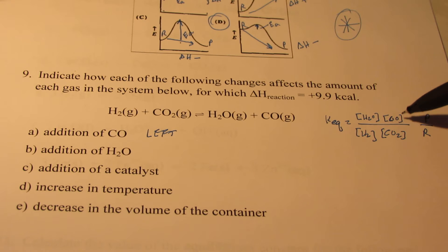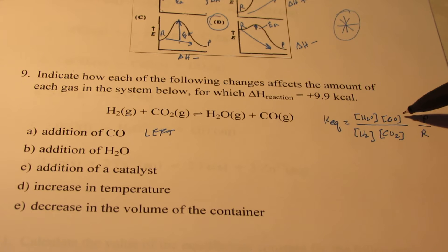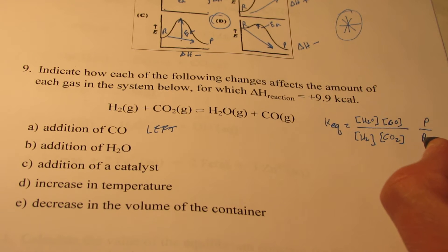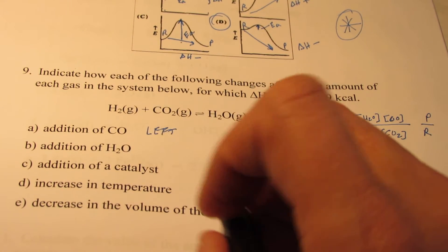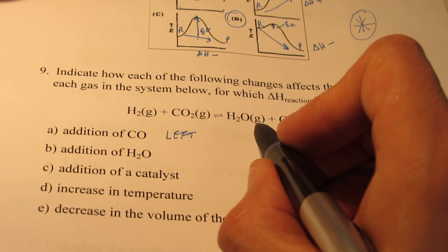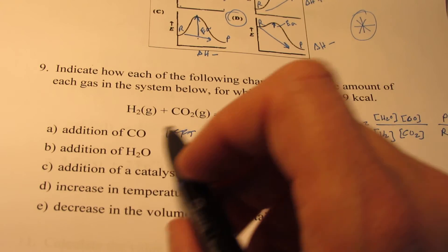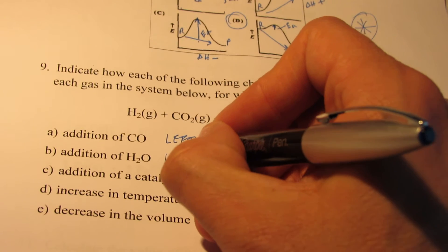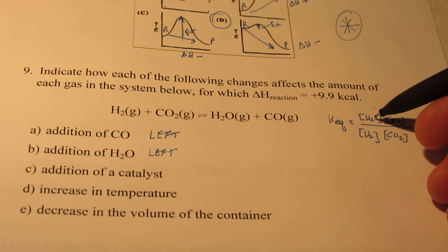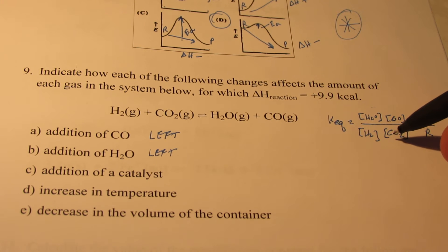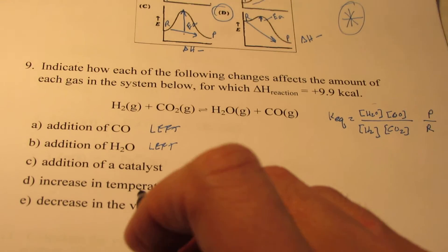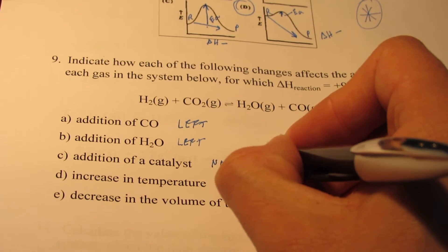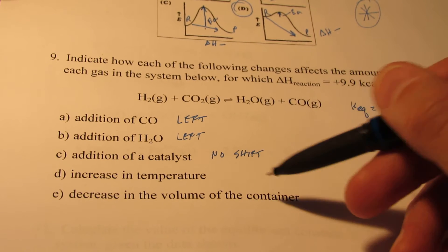Using our equilibrium expression — if CO gets bigger, for our constant to stay constant, doesn't our denominator have to get bigger as well? And our denominator represents the reactants, which verifies that we're shifting left. Now let's look at adding water. Water is a vapor, so it will affect the equilibrium when I add it or take it away. If I add water, wouldn't that also shift the equilibrium to the left to get rid of what I just added? The addition of a catalyst — some might call that a trick question. A catalyst does not affect the equilibrium shifting. It gets you there sooner, but it does not shift it right or left.